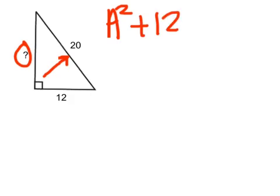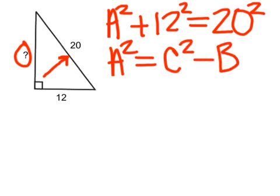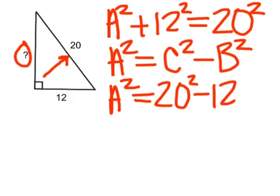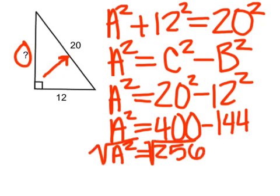We're going to have A squared plus 12 squared equals 20 squared. We're plugging in B and C this time. If you rearrange it, it'll be C squared minus B squared, but you'll get the same answer if you just plug in the numbers and solve for A. That'll be 20 squared minus 12 squared — 400 minus 144. If we take the square root, our answer is 16.